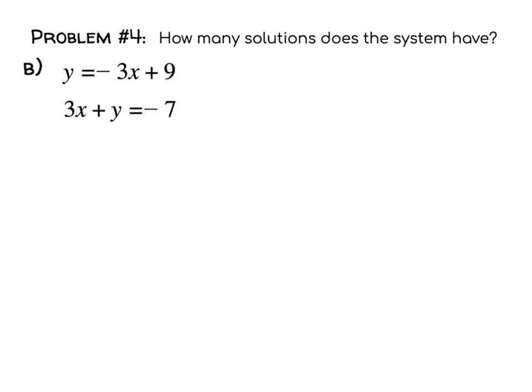How many solutions does the system have? Well, if I was to rewrite this second equation by subtracting 3x from both sides, you'd see that we would get y equals negative 3x minus 7. What does that mean? Look, we have the same slope on both of these, so we're going to get a special case.